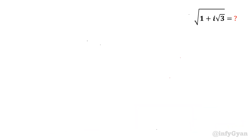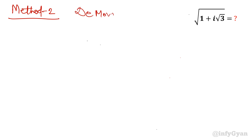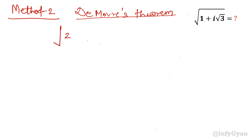Now let us solve this question by the second method, using De Moivre's theorem. I will take 2 common from inside the square root, writing it as root 2 times 1 over 2 plus i times root 3 over 2, whole to the power half.